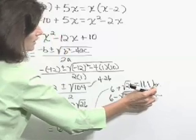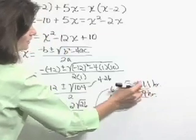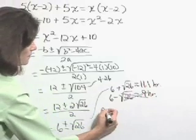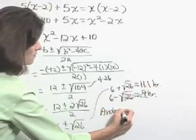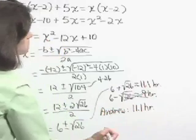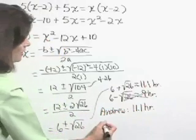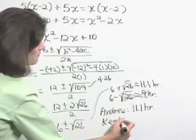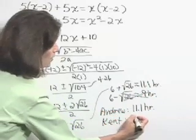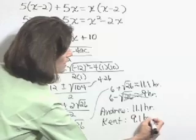However, the 11.1 is going to check out, so let's summarize and write our answer very clearly then. Andrew's time is 11.1 hours, and Kent's time then is that 11.1 minus 2, that's 9.1 hours.